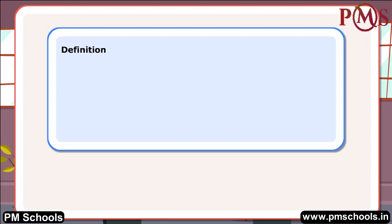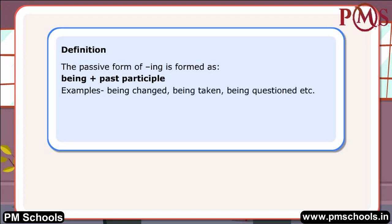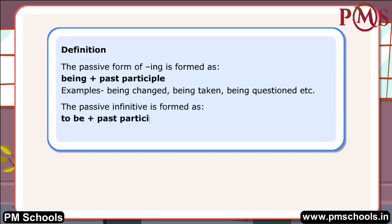Definition: The passive form of -ing is formed as being plus past participle. Examples: being changed, being taken, being questioned, etc. The passive infinitive is formed as to be plus past participle. Examples: to be told, to be done, to be selected.